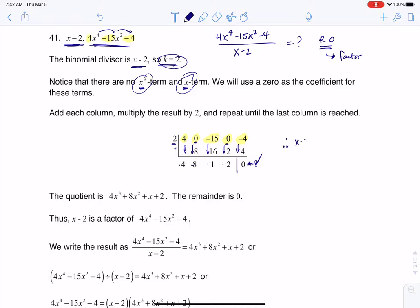So that tells us x minus 2 is a factor. I can't spell factor today. Is a factor. And that's great. It's a factor. So we know x minus 2 divides evenly into 4x to the 4th minus 15x squared minus 4.